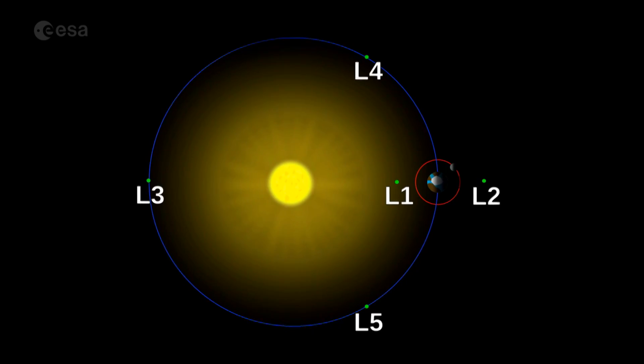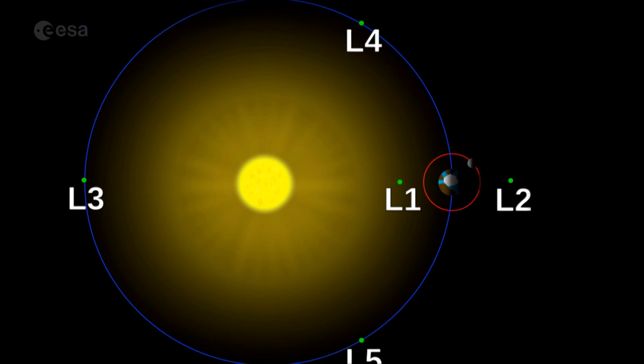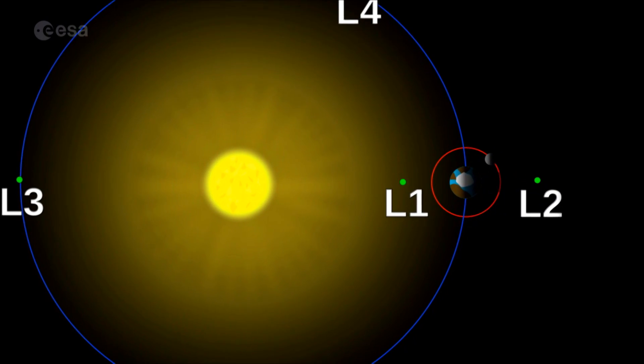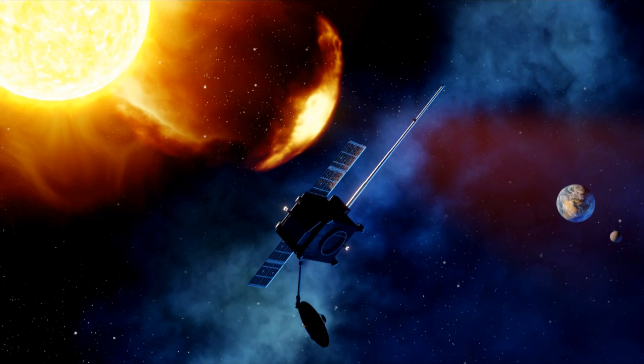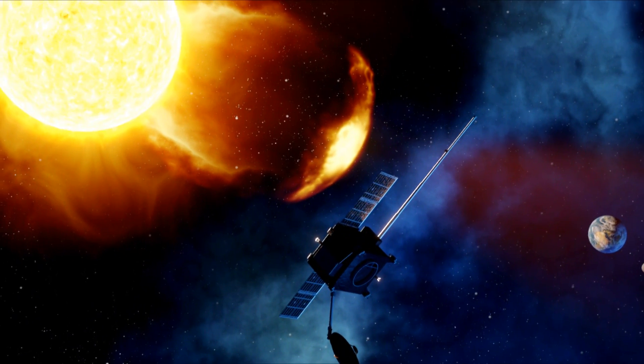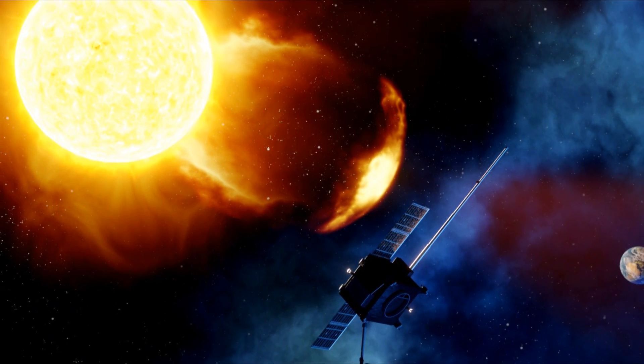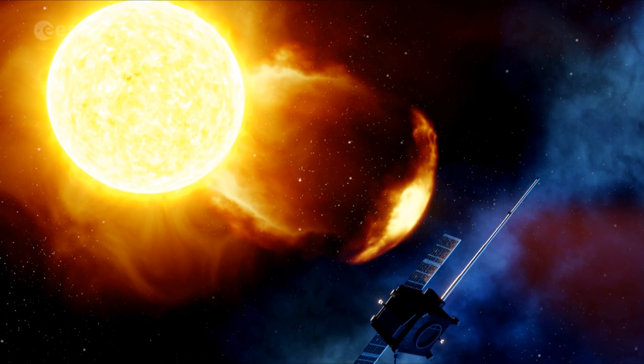In order to improve our capability to forecast space weather, we want to have two satellite systems outside the magnetic field of the Earth. One point is the L1 point — the first Lagrange point — the stable point between the Sun and the Earth, about 1.5 million kilometers from the Earth towards the Sun. We want to have there a spacecraft that can provide us information about the propagation of events from the Sun towards the Earth.